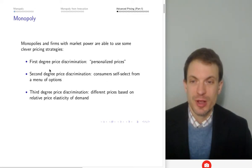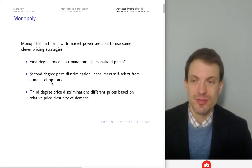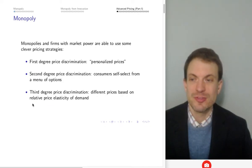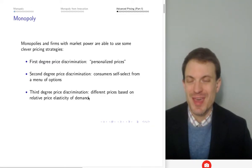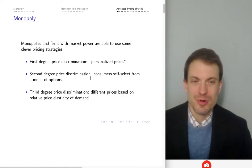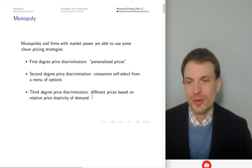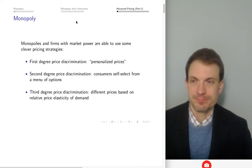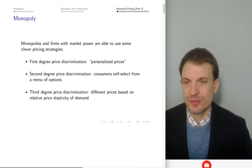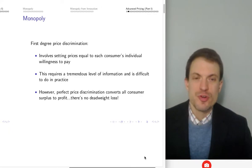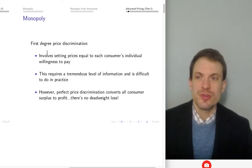First degree price discrimination means personalized prices. Second degree price discrimination means consumers are self-selecting from a menu of options. Third degree price discrimination means different prices based on relative price elasticity of demand — essentially different prices based on membership in readily identifiable groups such as students versus non-students, or adults versus children.